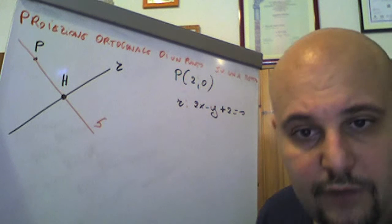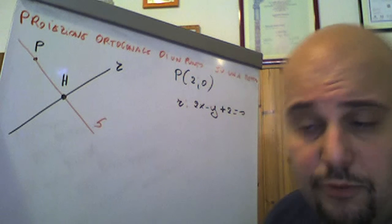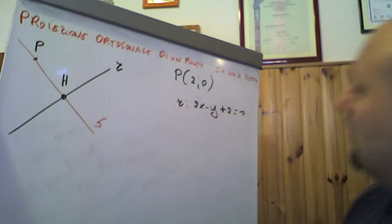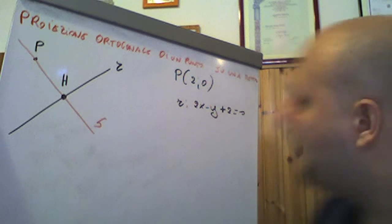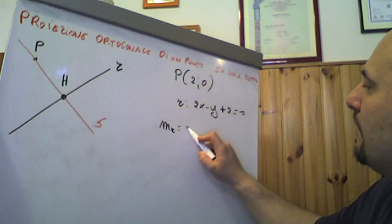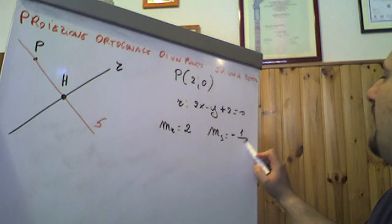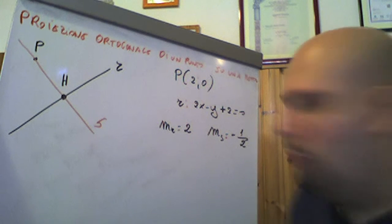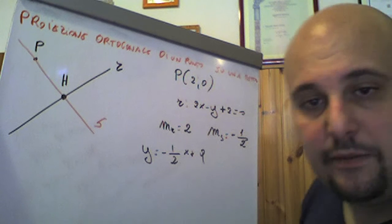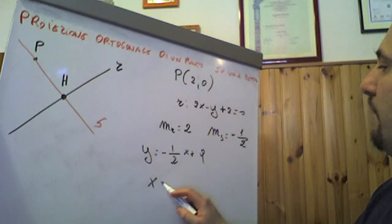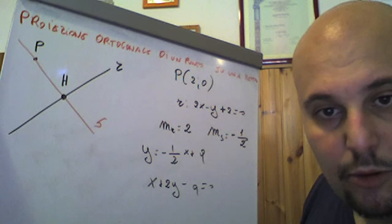Cosa facciamo? Abbiamo già visto nel video precedente che possiamo utilizzare sia l'equazione del fascio improprio che quella del fascio proprio. Supponiamo di utilizzare quella del fascio improprio. In questo caso il coefficiente angolare della retta R vale 2, cioè -A/B. Quindi M di S, ovvero della retta perpendicolare, sarà, per definizione dell'antireciproco, -1/2. Pertanto avremo Y = -1/2 x + Q. Se la scriviamo in forma implicita otteniamo x + 2y - Q = 0.